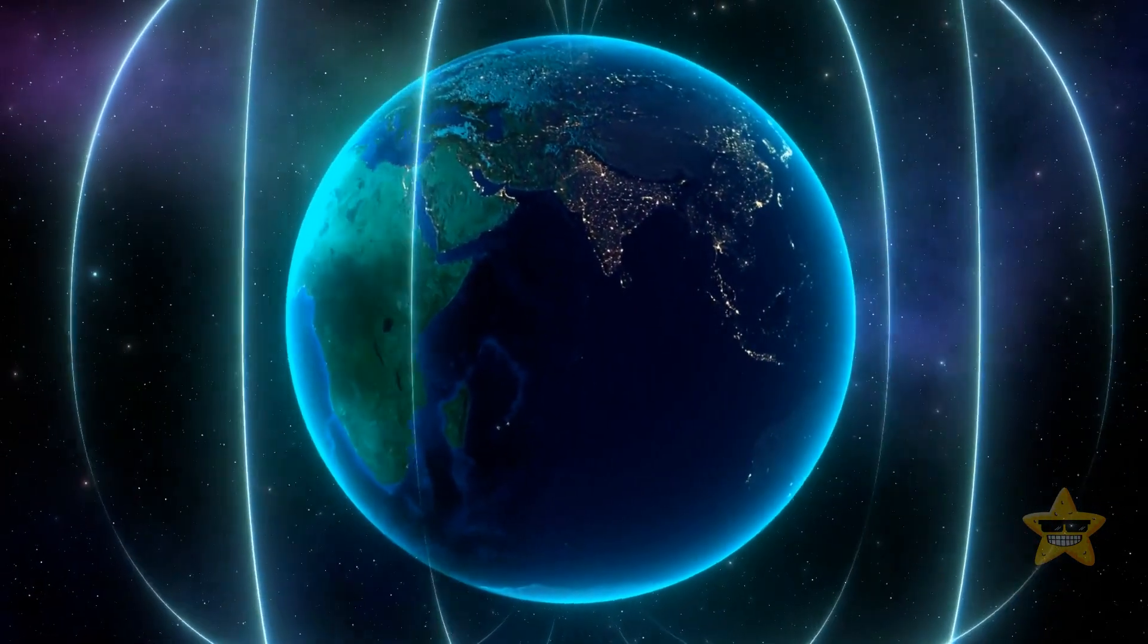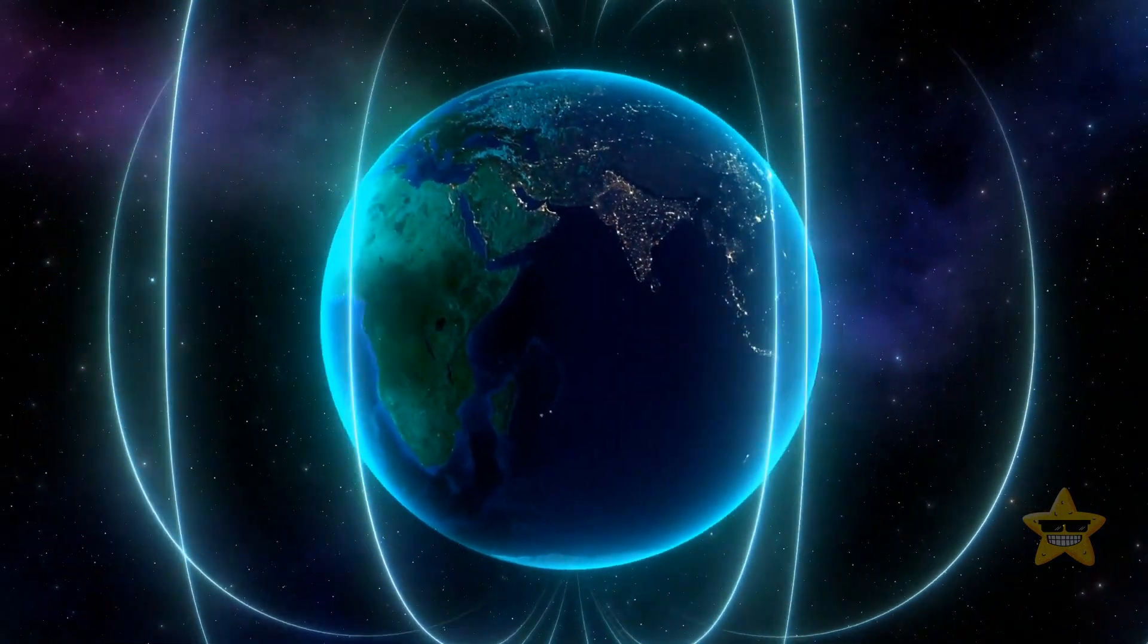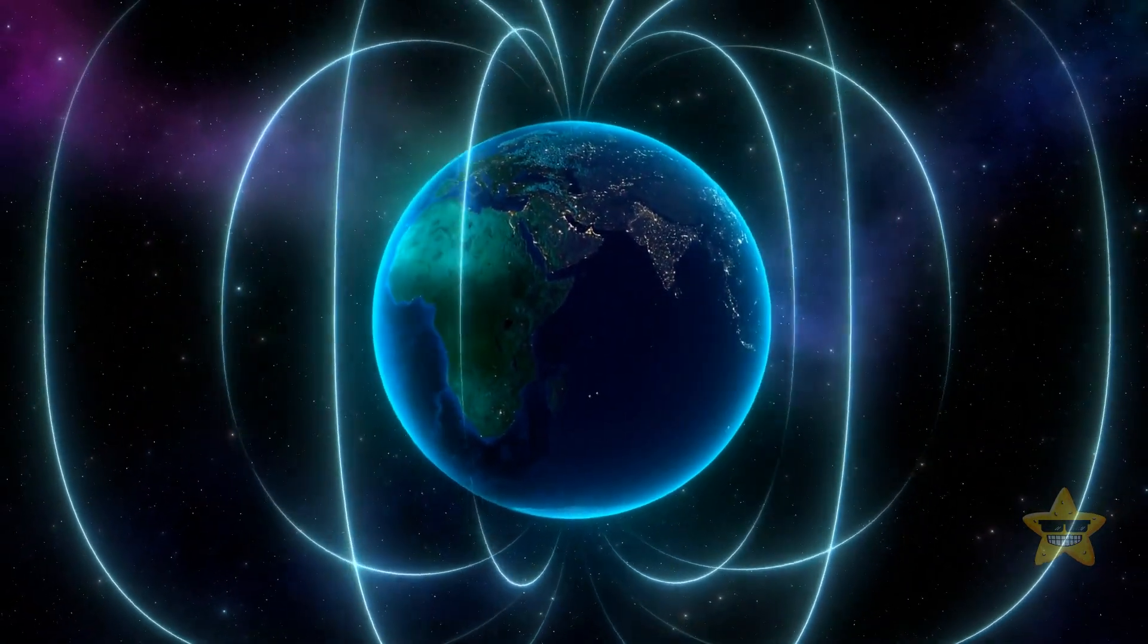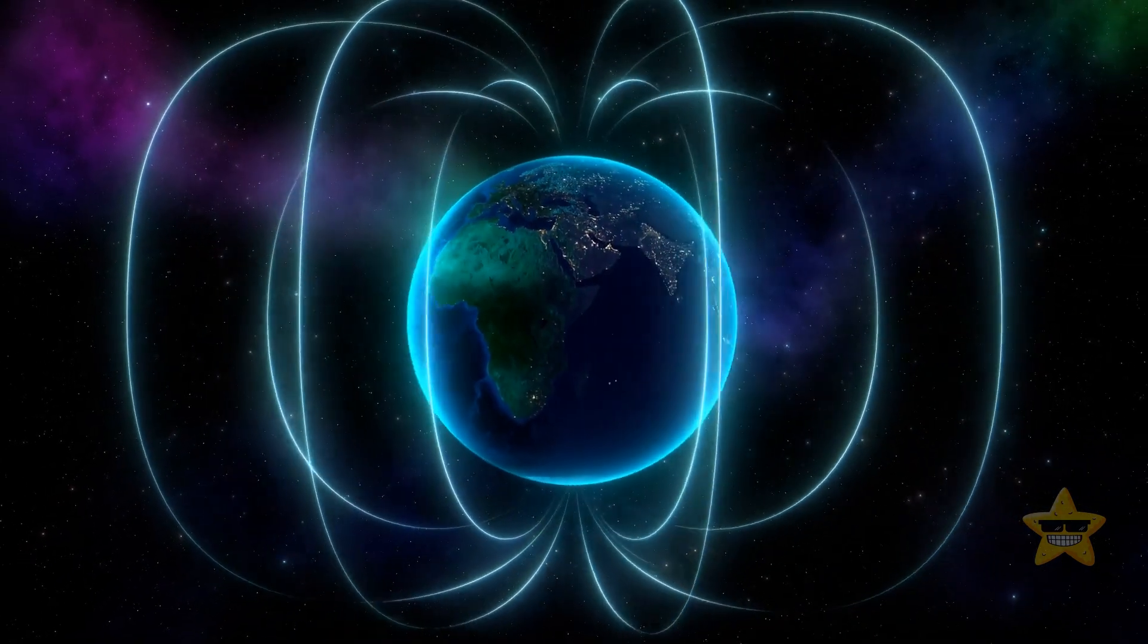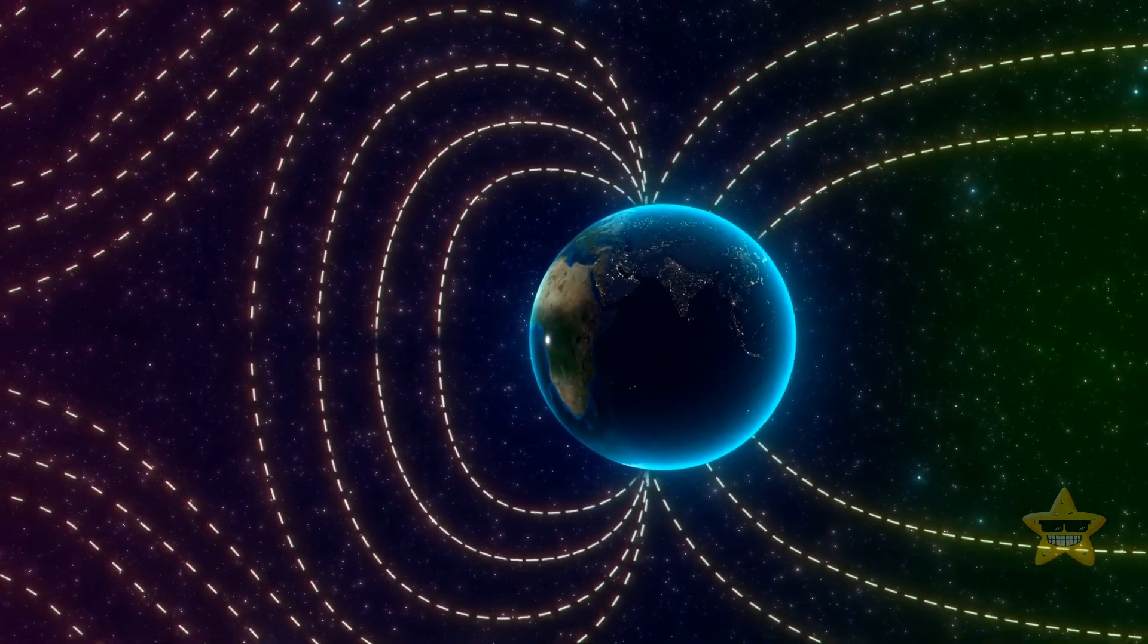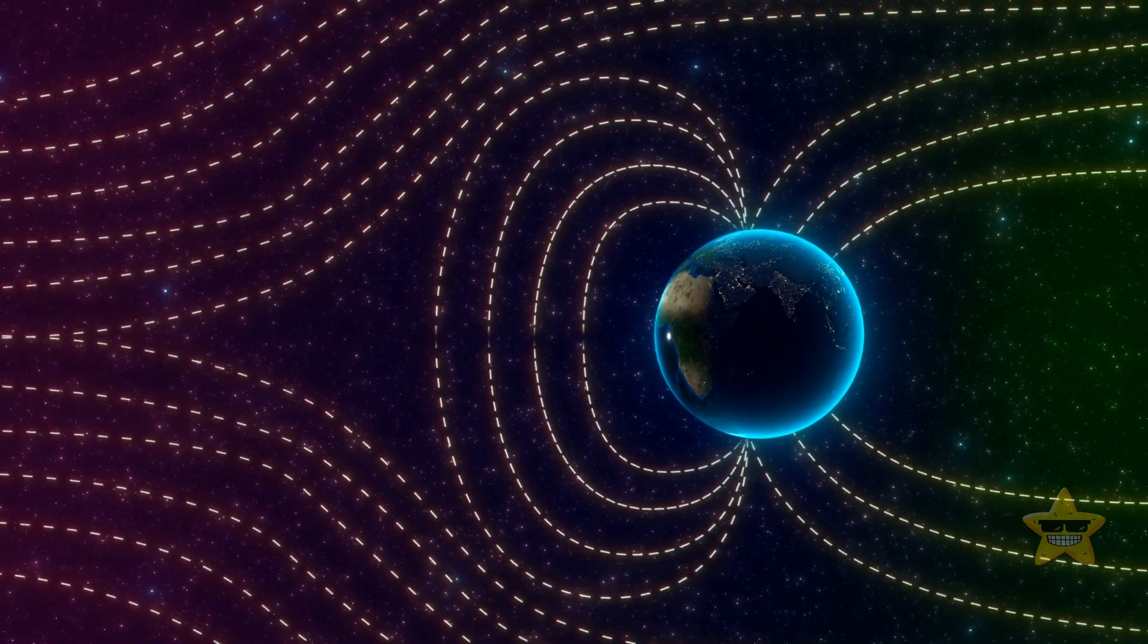Now you may ask, wouldn't Earth's magnetic field protect us? Indeed, cosmic ray particles can be deflected by magnetic fields. But everything would depend on the distance between our planet and a supernova.